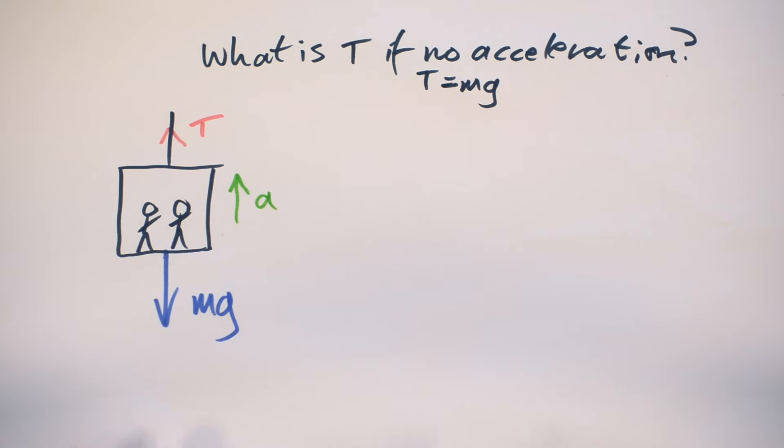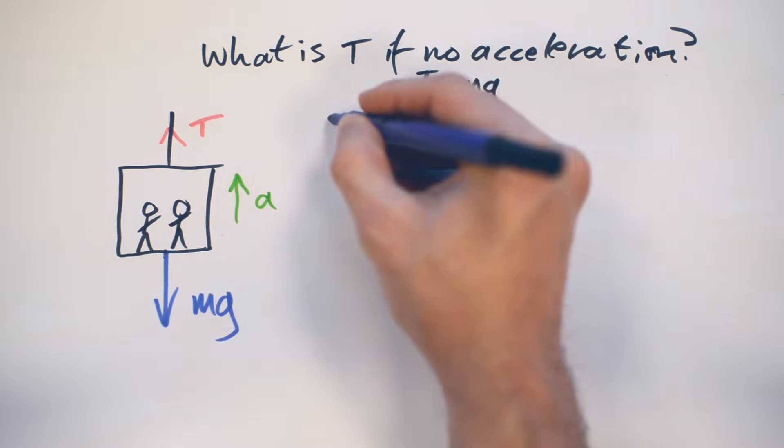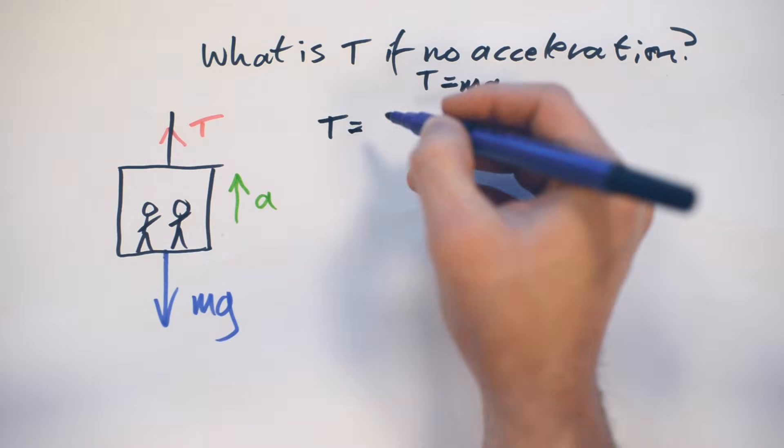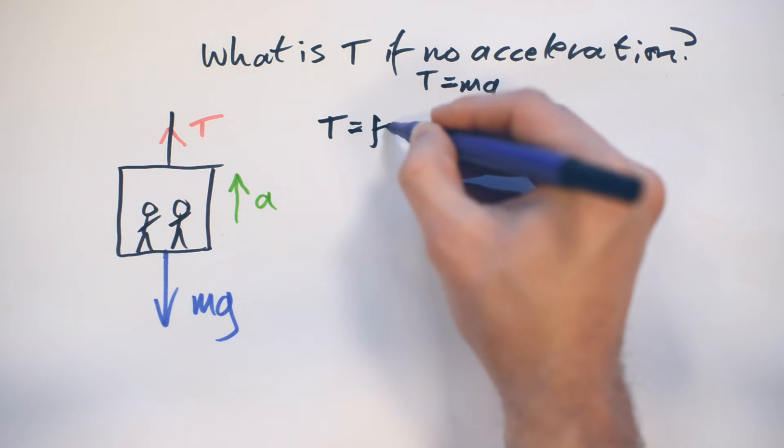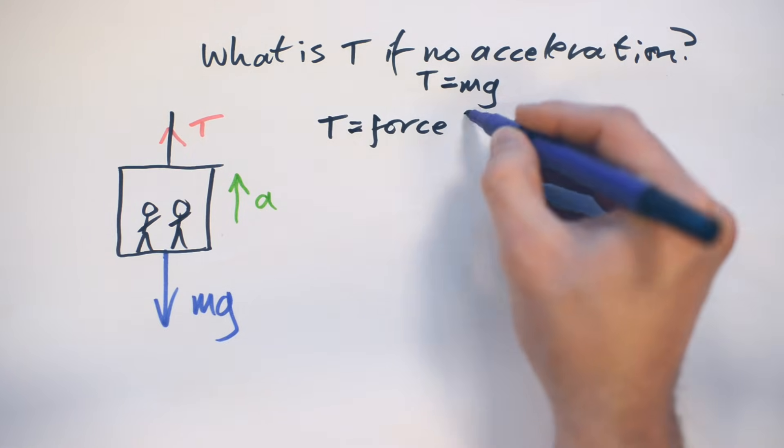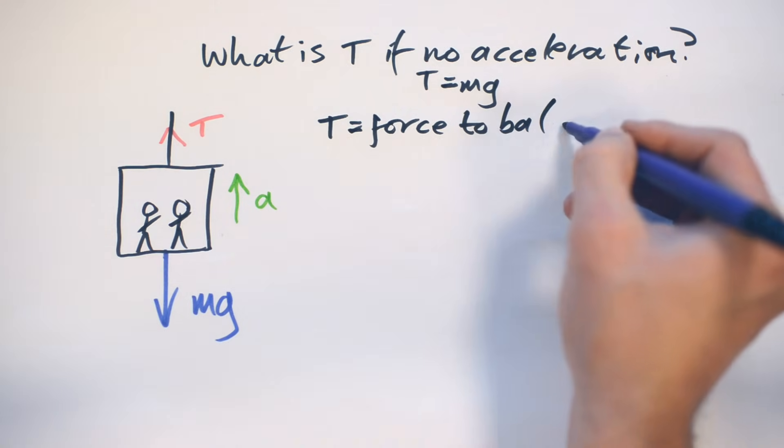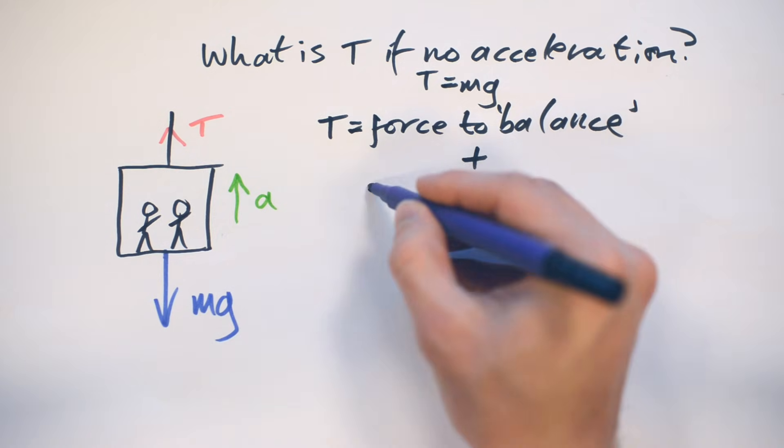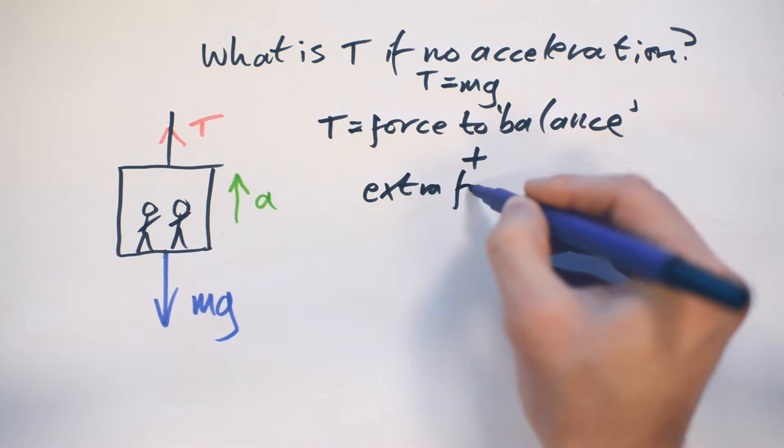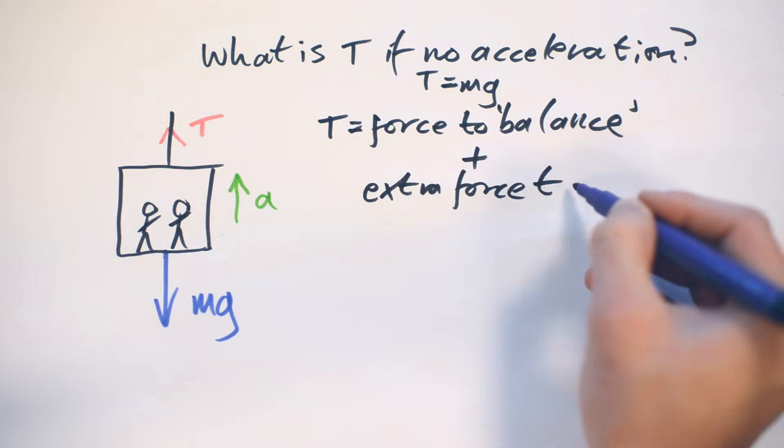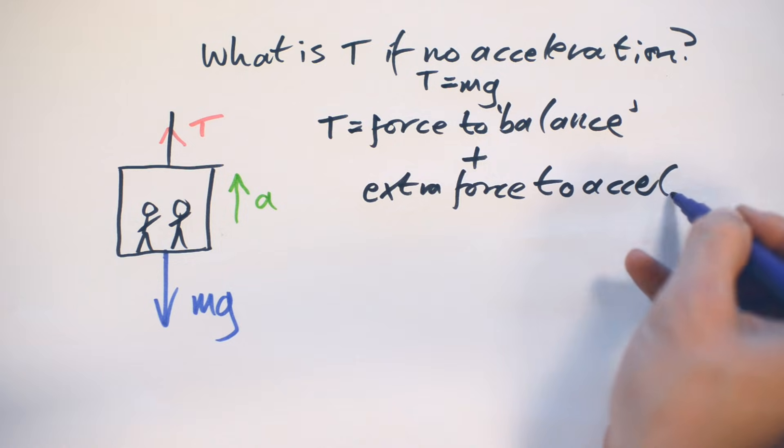But of course, because we know it's accelerating as well, then obviously it's not going to be just Mg. It's going to be more than Mg. So therefore, we can say that maybe T equals force to balance plus extra force to accelerate.